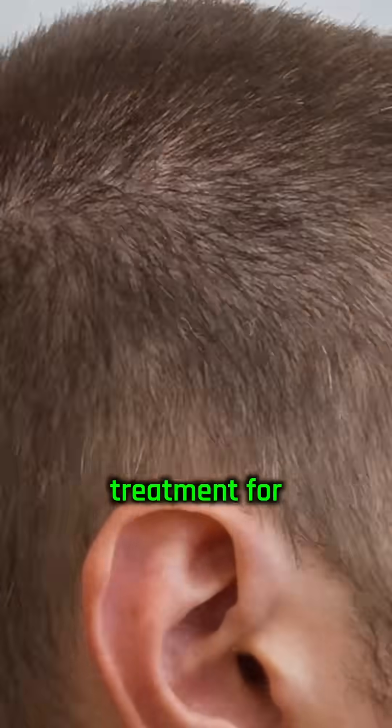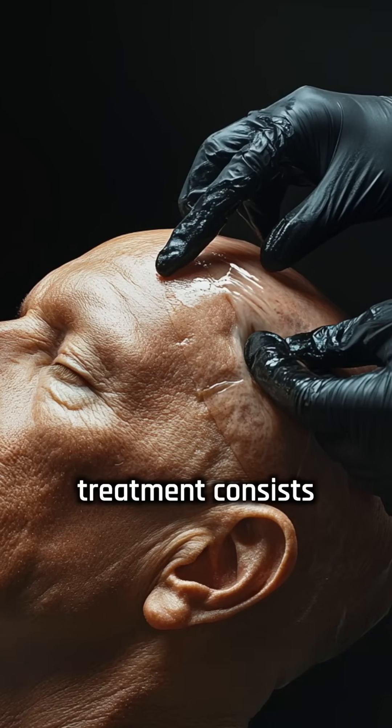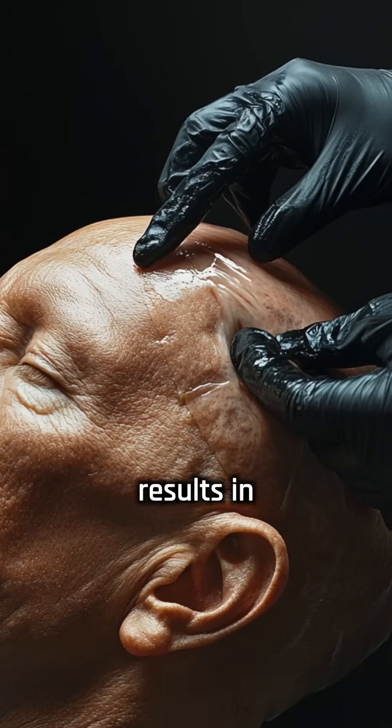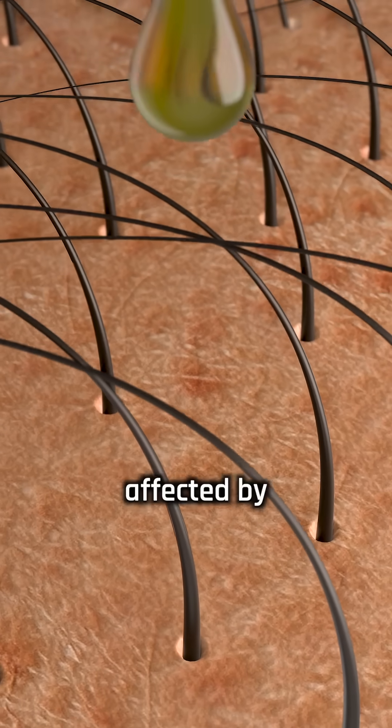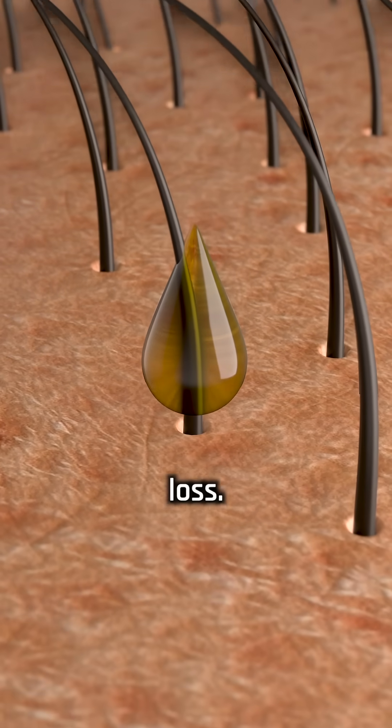Scientists have developed a potential new treatment for baldness. The new treatment consists of a sugar gel that showed strong results in lab mice, promoting regrowth of thick, long fur in areas affected by testosterone-driven hair loss.